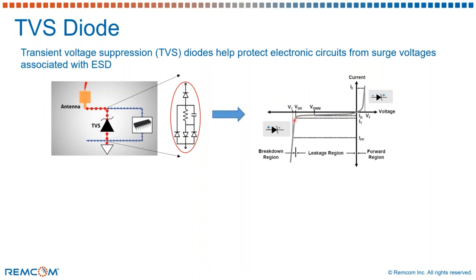But as the voltage increases further, reaching a point called clamp voltage, this is the point where most of the current is shunted to the ground, and the excessive voltage is clamped off.